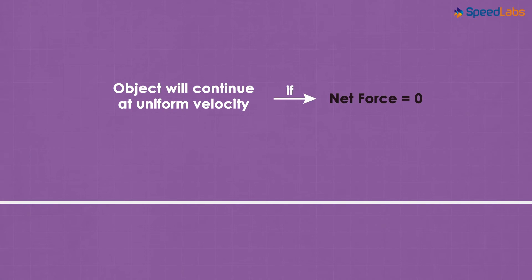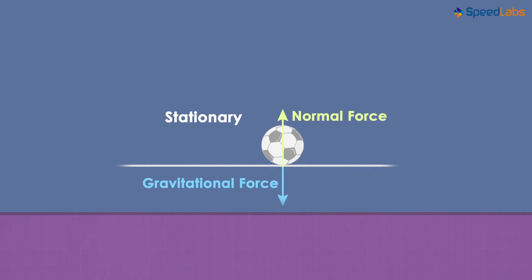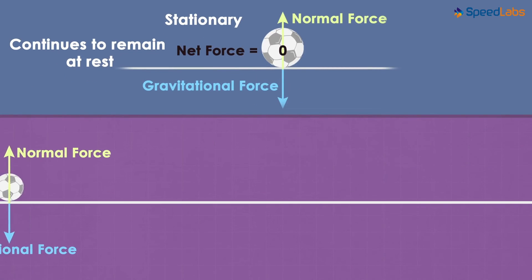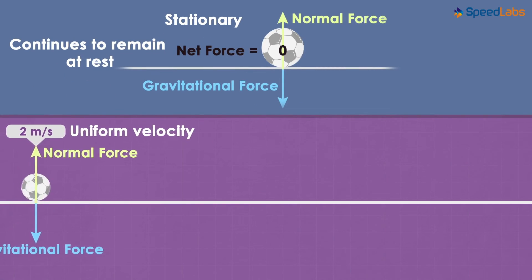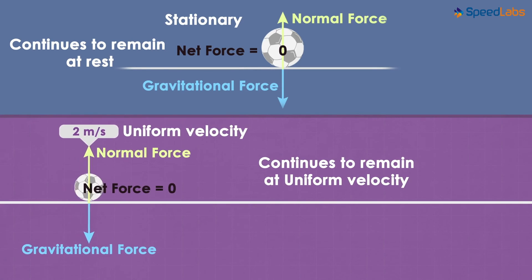So there are two things we've learnt here. First, if the object is stationary and the net force acting on it is 0 then it will continue to remain at rest. Second, if the object is moving at uniform velocity and the net force acting on it is 0 then it will continue to move at that same uniform velocity.